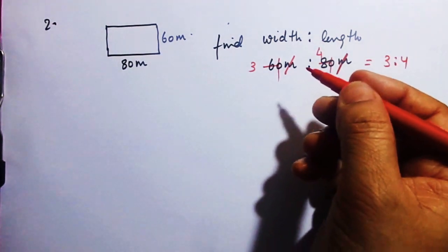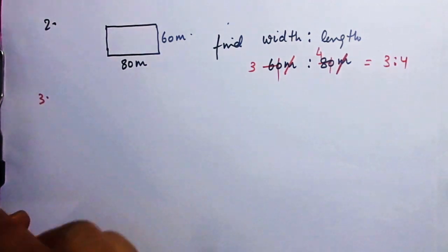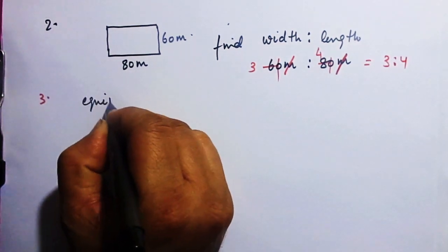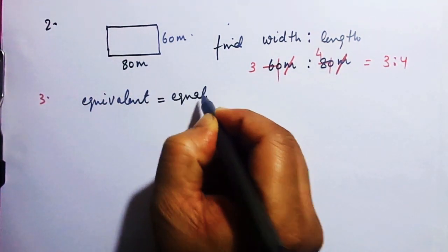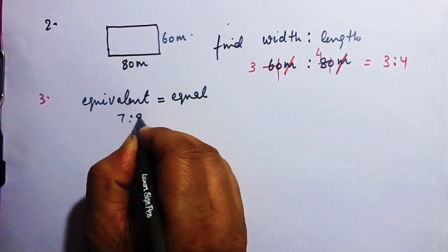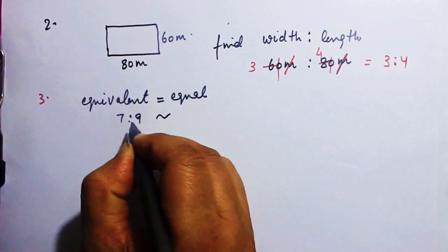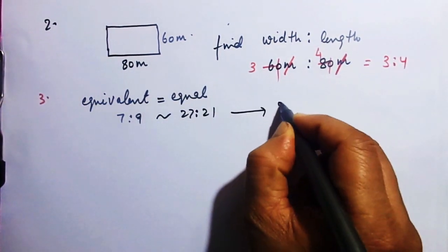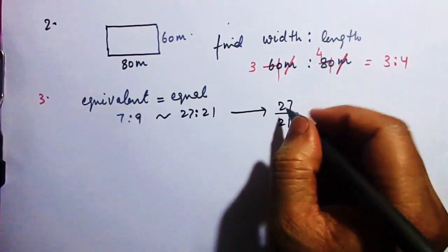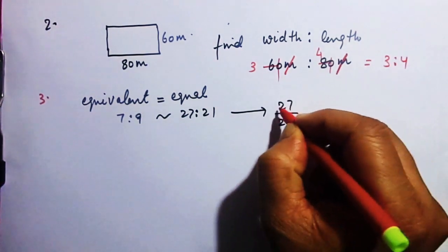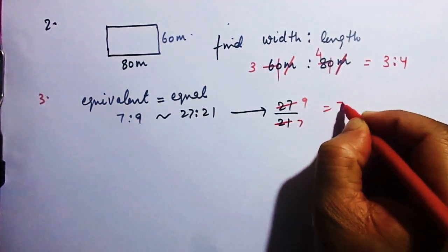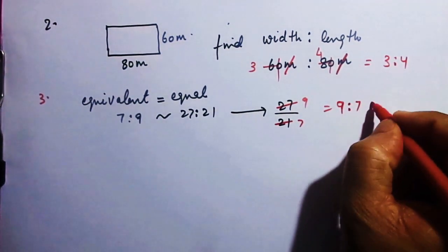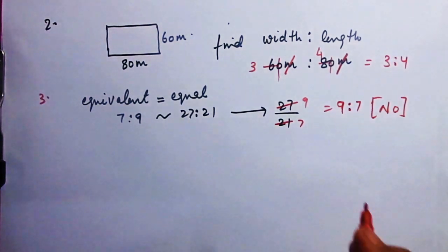Number 3: State true or false. Equivalent means equal. Are the ratios 7 is to 9 and 27 is to 21 equivalent? Solve 27 by 21: divide by 3, giving 9 is to 7. That is 9 is to 7, not equal to 7 is to 9. Therefore the answer is false.